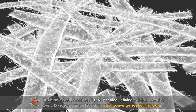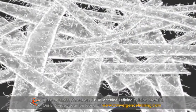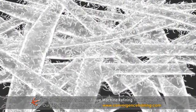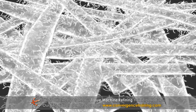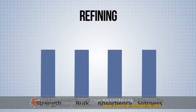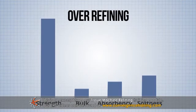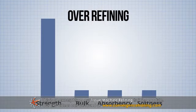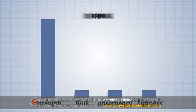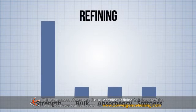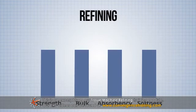Strength properties increase with refining due to improved bonding from fiber flexibility and external fibrillation. Although it has a positive impact on strength, too much refining can have a negative impact on desirable tissue attributes such as bulk, absorbency, and softness. Therefore, refining must balance strength with the other sheet properties.